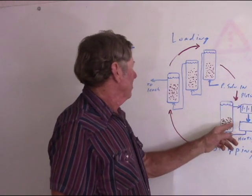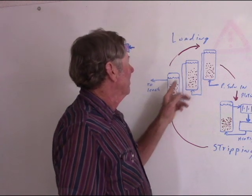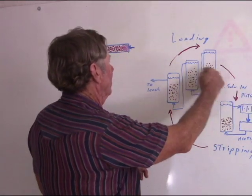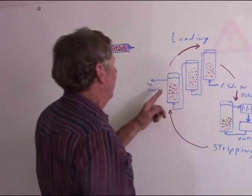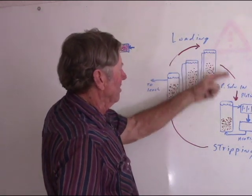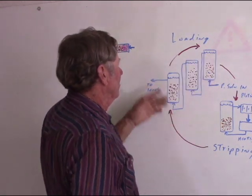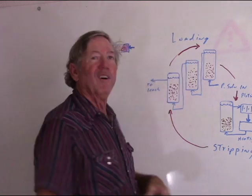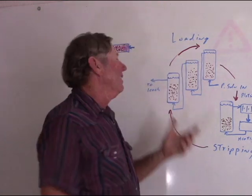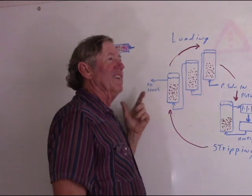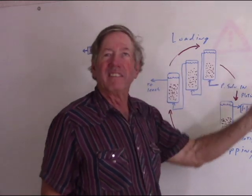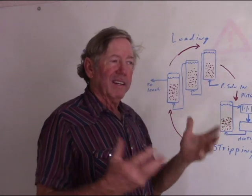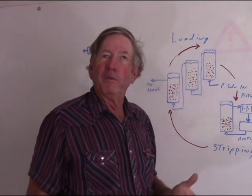Once stripped, the carbon would be moved back to the first column. You'll notice the solution is flowing one way and the carbon is moving the other way — it's moving in steps, but nevertheless it's moving that way. That's why it's called counter-current. The carbon is moving against the flow of solution, and that's why you would do it.